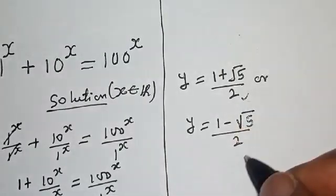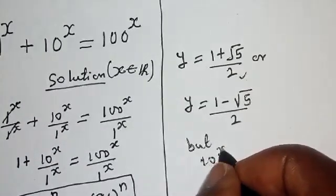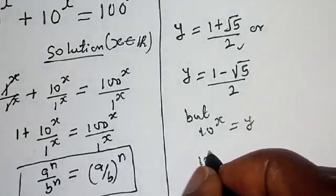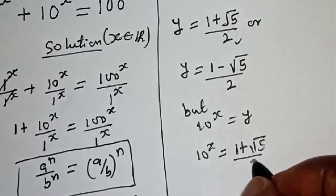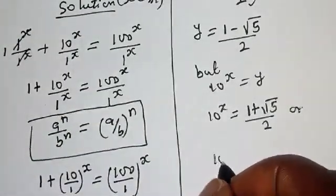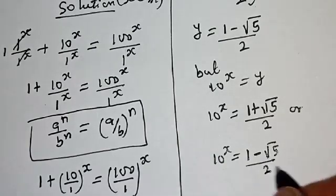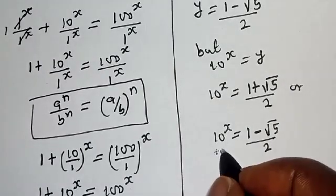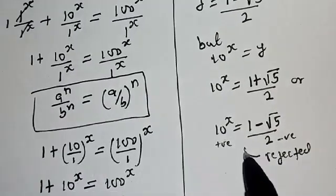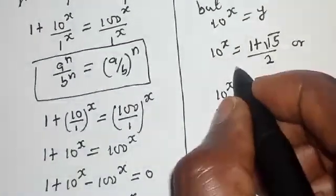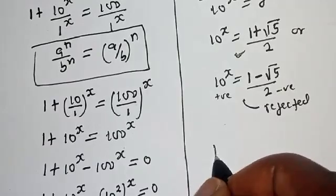This is also called the golden ratio. Now since 10^s equals y, we have 10^s equals (1 + √5)/2 or 10^s equals (1 − √5)/2. The second solution is negative and must be rejected because 10^s must be positive. So the only valid solution is 10^s equals (1 + √5)/2.